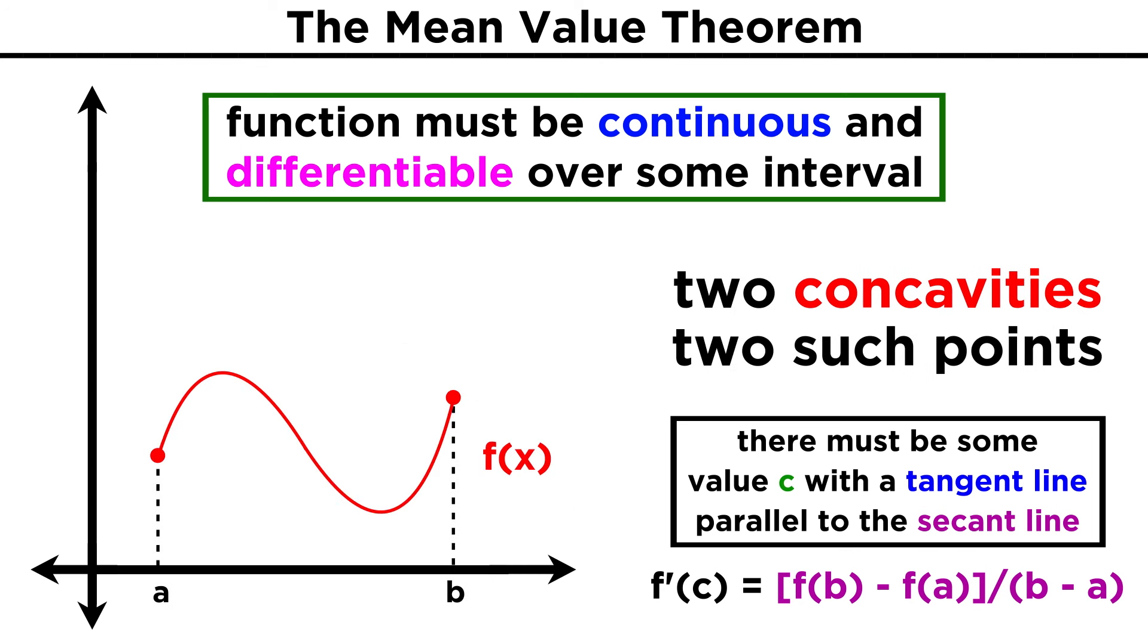Now look at this example, where we go from concave down to concave up, before reaching the endpoint. There are now two such points where the tangent line is parallel to the secant line.